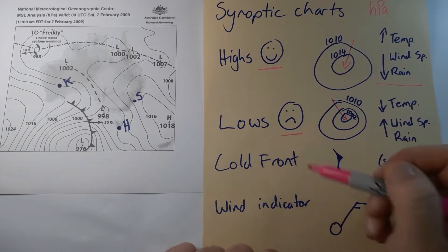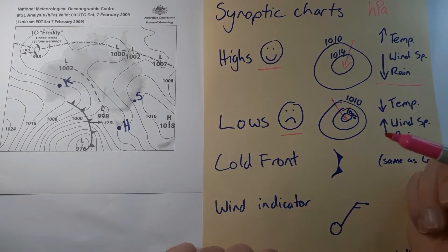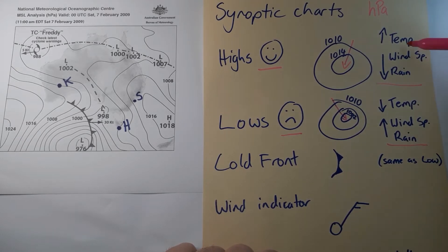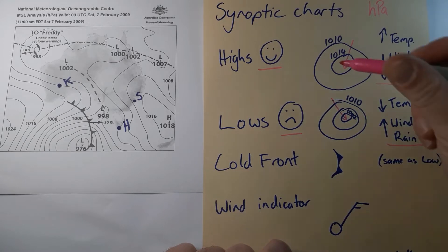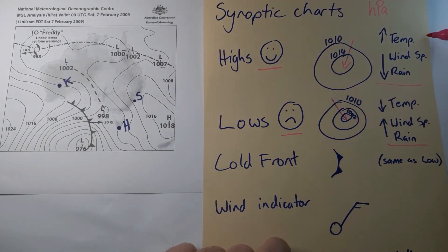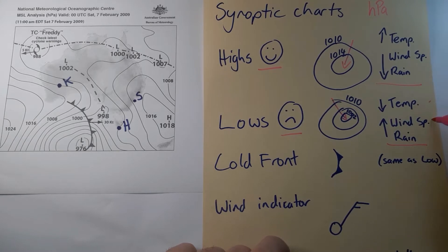These are often called 'lousy lows' because lows bring lousy weather — exactly the opposite of a high. There'll be a decrease in temperature, an increase in wind speeds, and an increased chance of rain. When you see a high or a low, always associate all three of those weather conditions. If asked about weather conditions, comment on all three for either a high or a low.